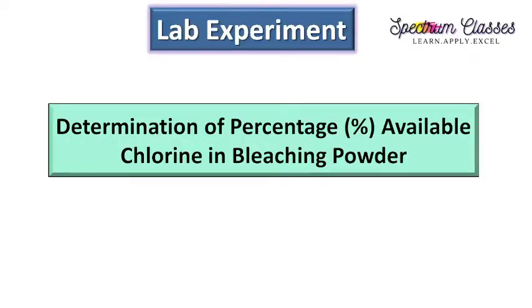Welcome back to Spectrum Classes. In this lab activity video, I am going to determine the percentage of available chlorine in bleaching powder. Bleaching powder is also known as chlorinated lime — it is a yellowish-white powder having a smell of chlorine gas and is readily soluble in water. It is prepared by passing chlorine gas over slaked lime at a temperature of 35 to 45 degrees centigrade, and its formula is CaOCl₂.